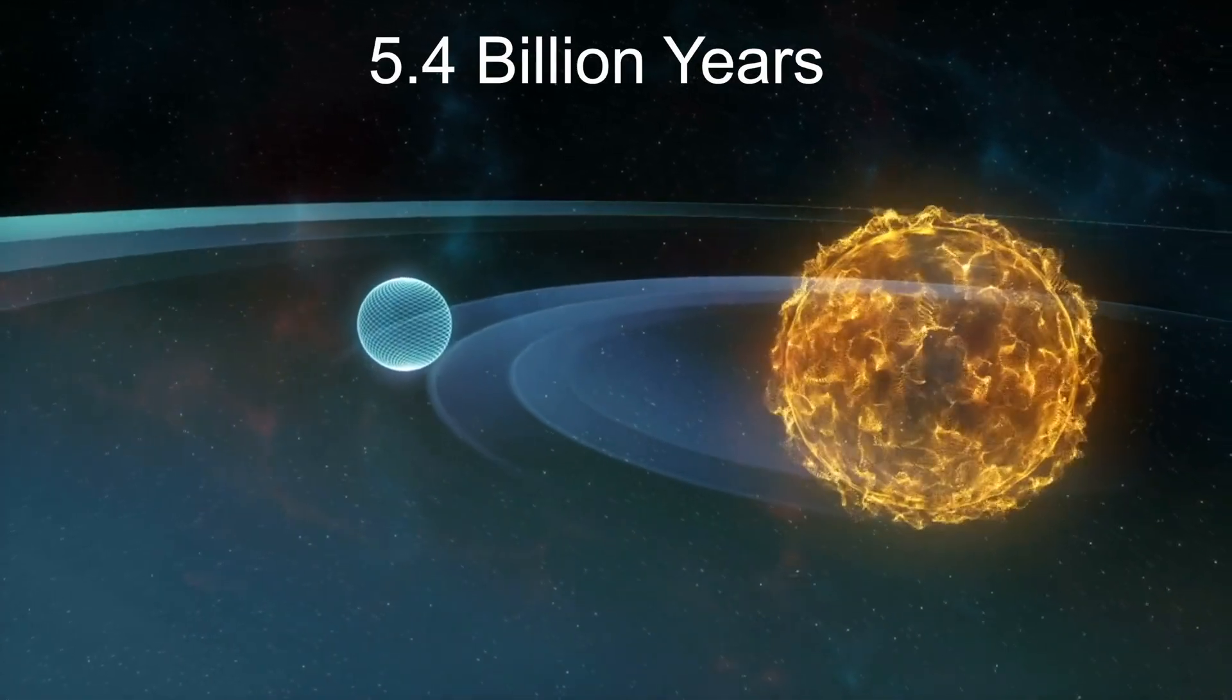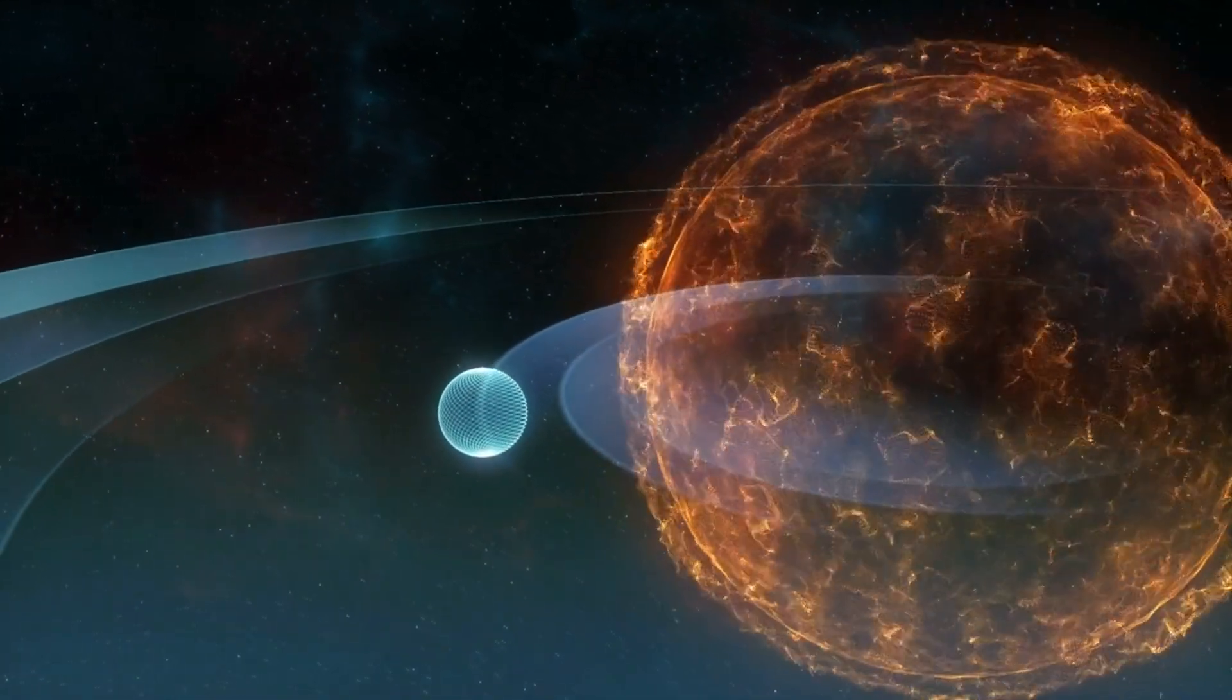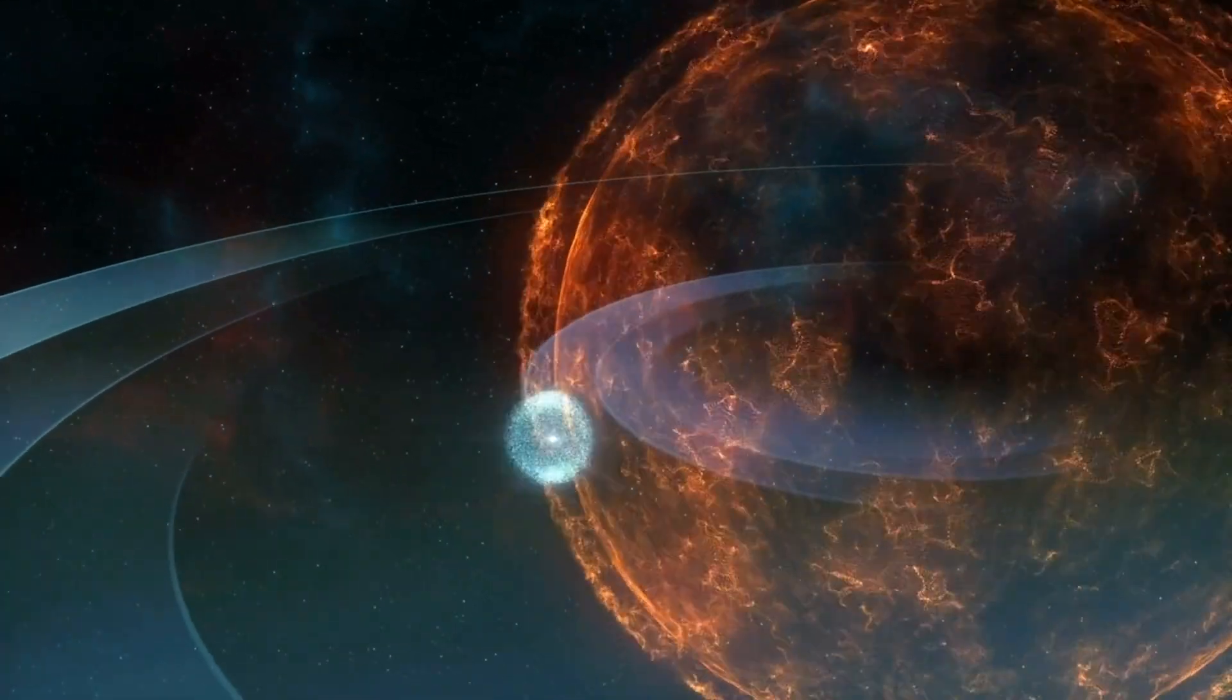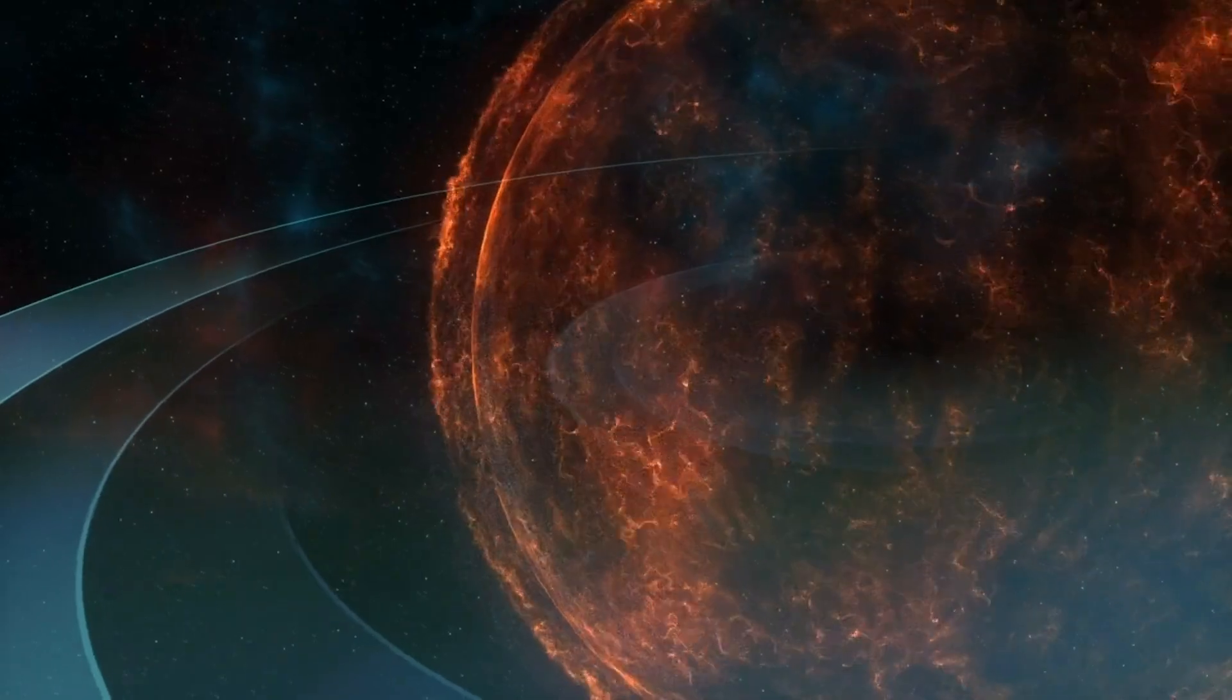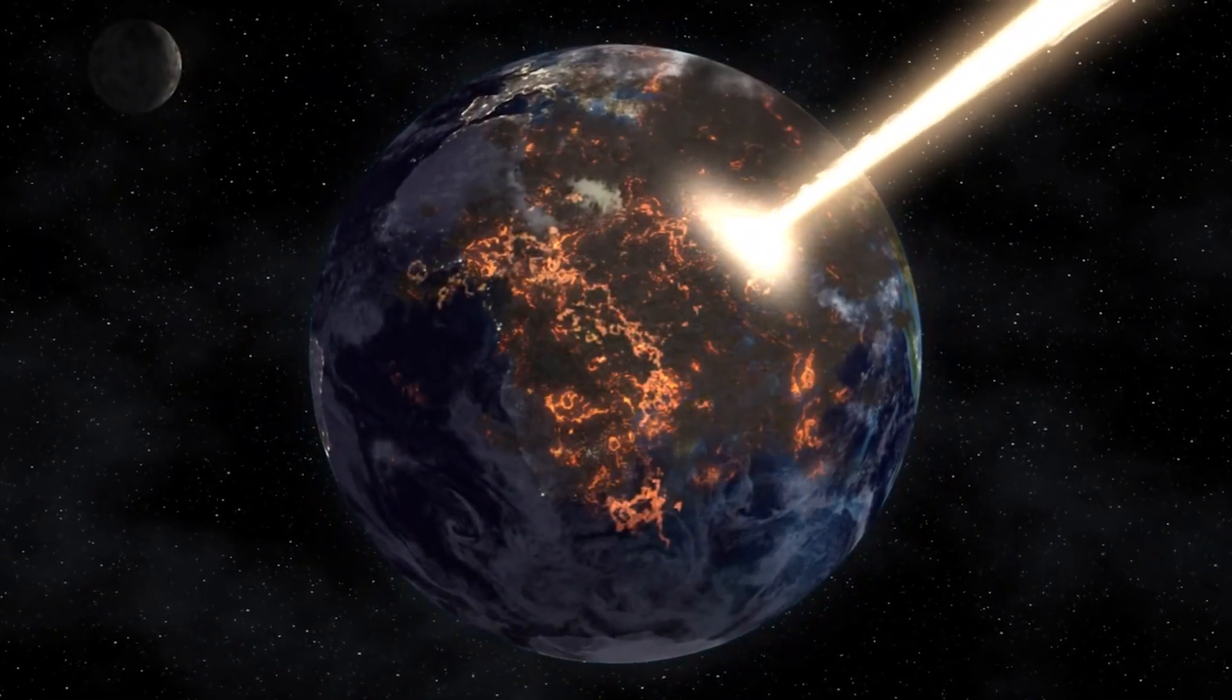By 5.4 billion years, the sun exhausts its supply of hydrogen and helium in its core and expands into a red giant, engulfing Mercury, Venus, and possibly Earth. Even if Earth escapes being engulfed, the intense heat from the sun scorches our planet.